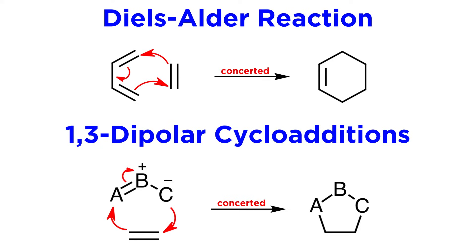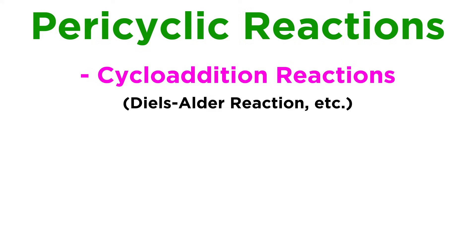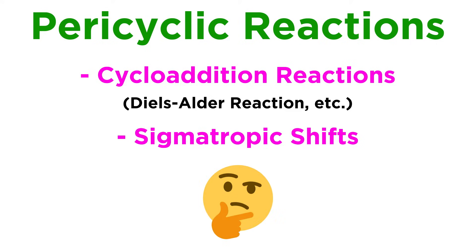In both cases, the reaction occurs in a single concerted step, forming two new sigma bonds at the expense of pi bonds. But cycloaddition reactions are only one subclass of all the various pericyclic reactions, so let's check out another subclass called sigmatropic shifts.